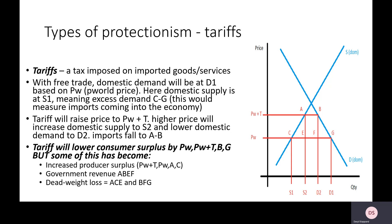At price world, domestic supply is now only at C — at that new low price firms are less willing and able to produce. Domestic demand is all the way at G. So under free trade, at C we have supply from domestic firms, and at G is demand among our people. The amount of imports coming in is the difference between C and G — the shortage of goods at price world is met by importing.